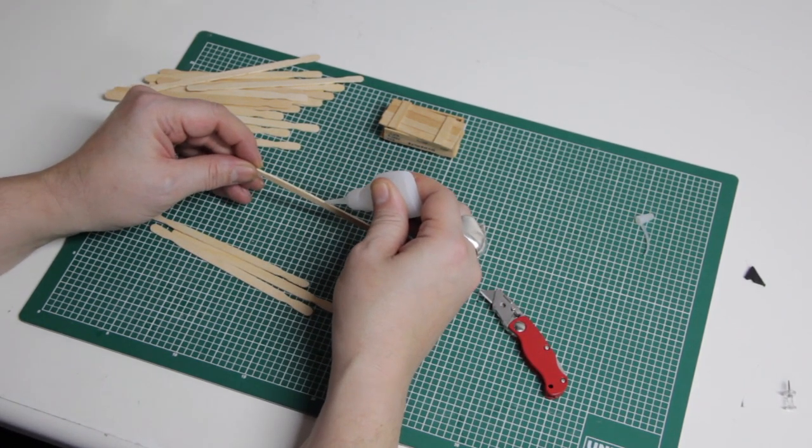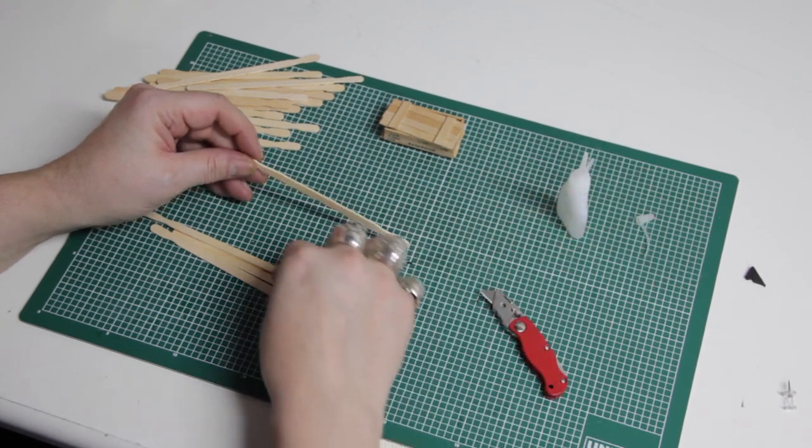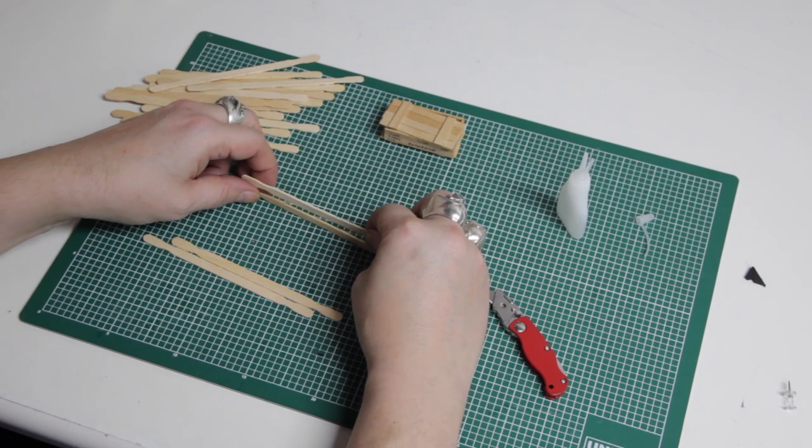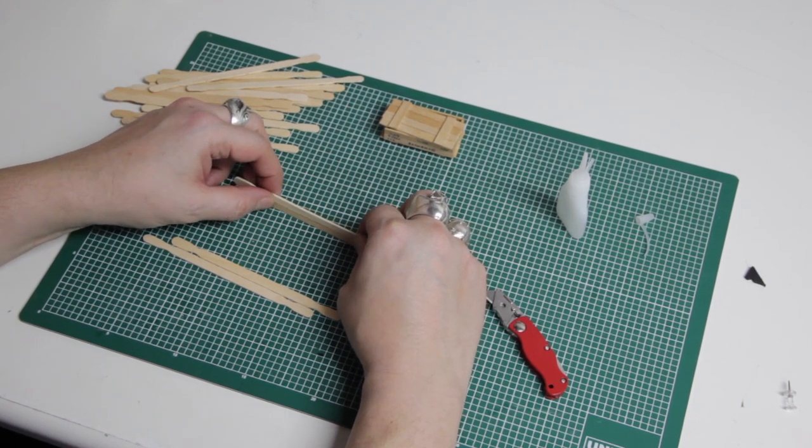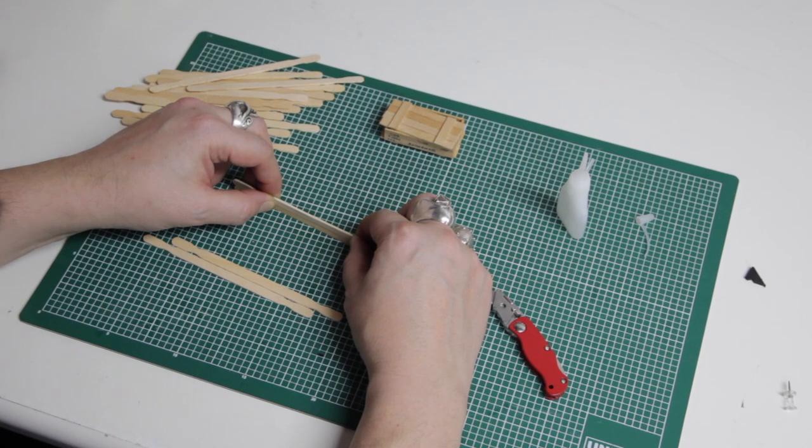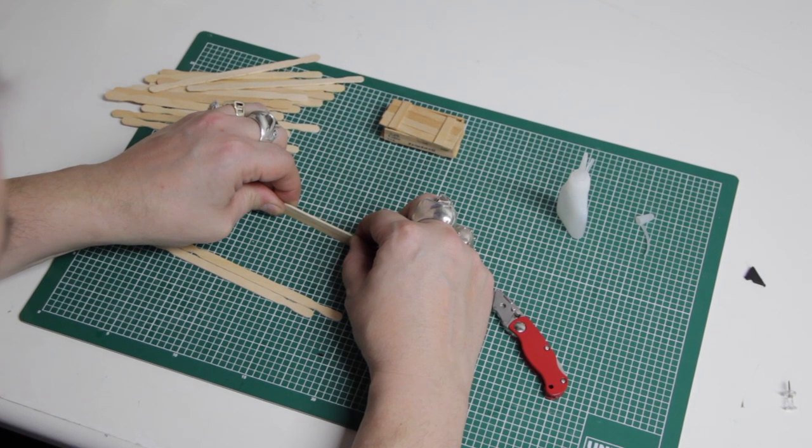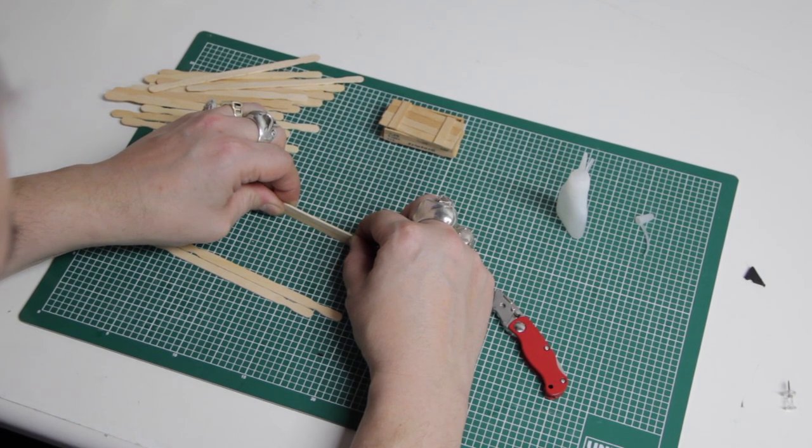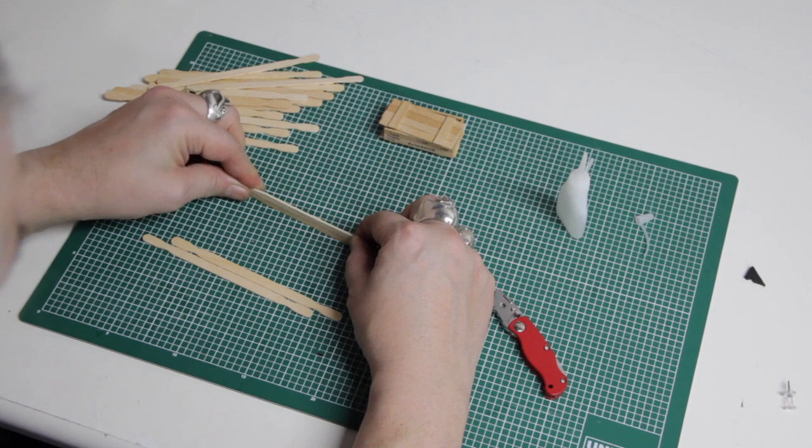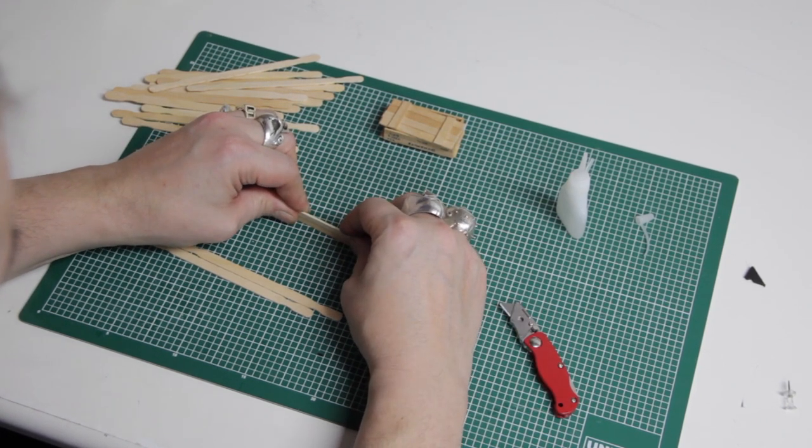We're going to take four stirrers, put some super glue down the edge. And we're just going to add them together and this will form the basis of either the sides or the lid or the bottom. When you're gluing wood together, sometimes it takes a little bit longer than plastic or other stuff because it's more absorbent. But you'll eventually get there.